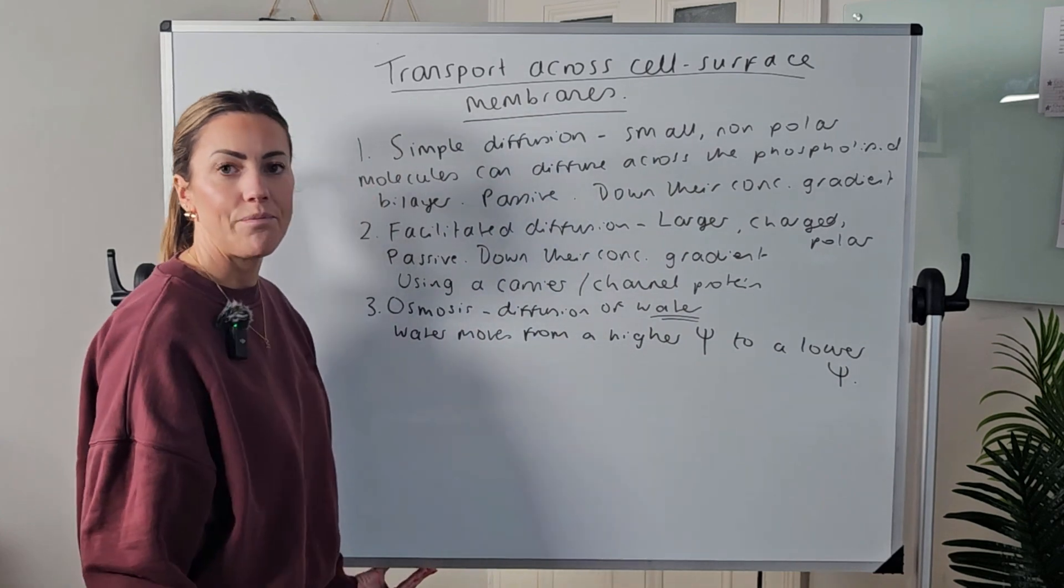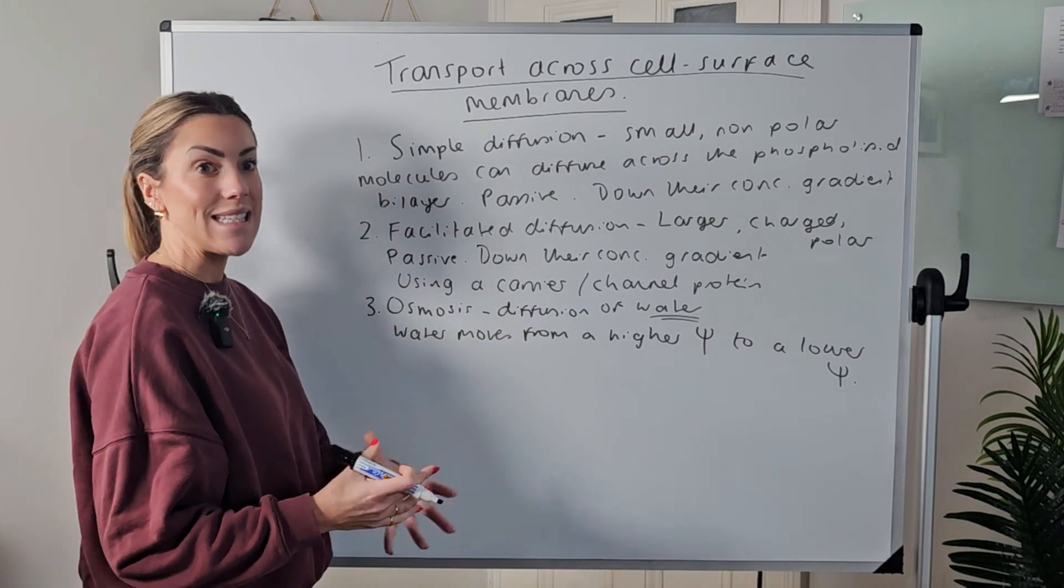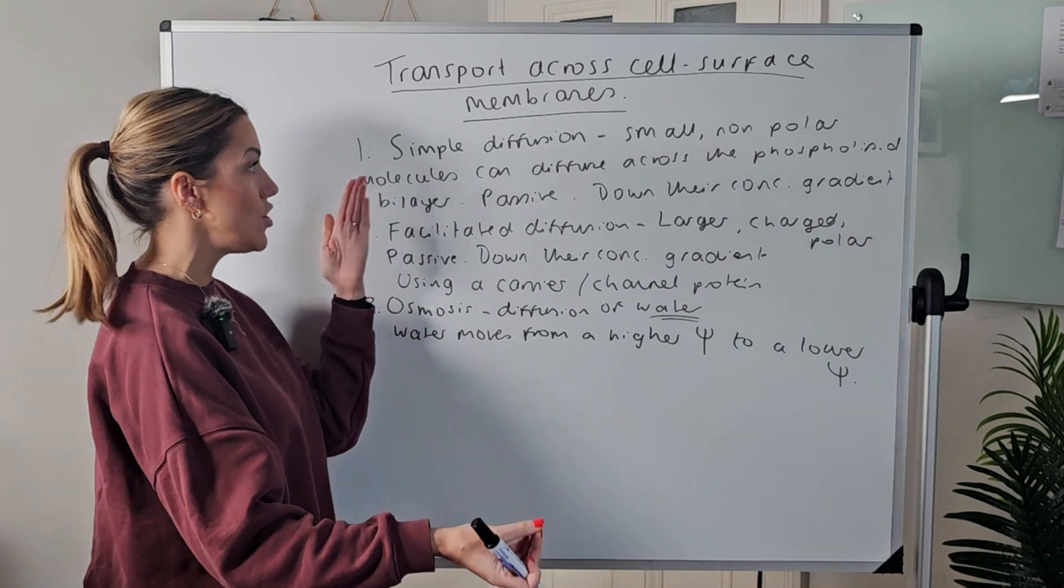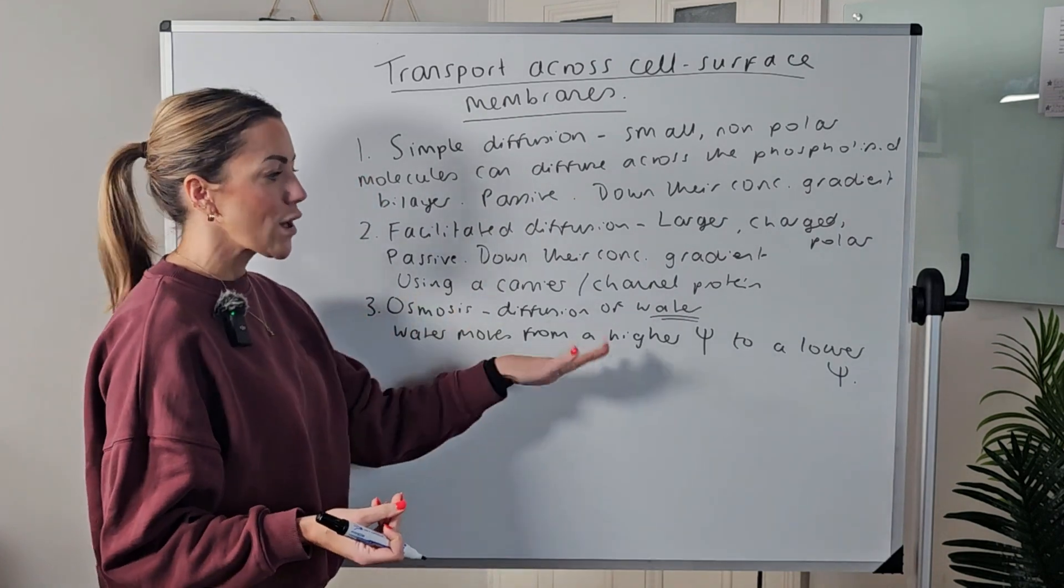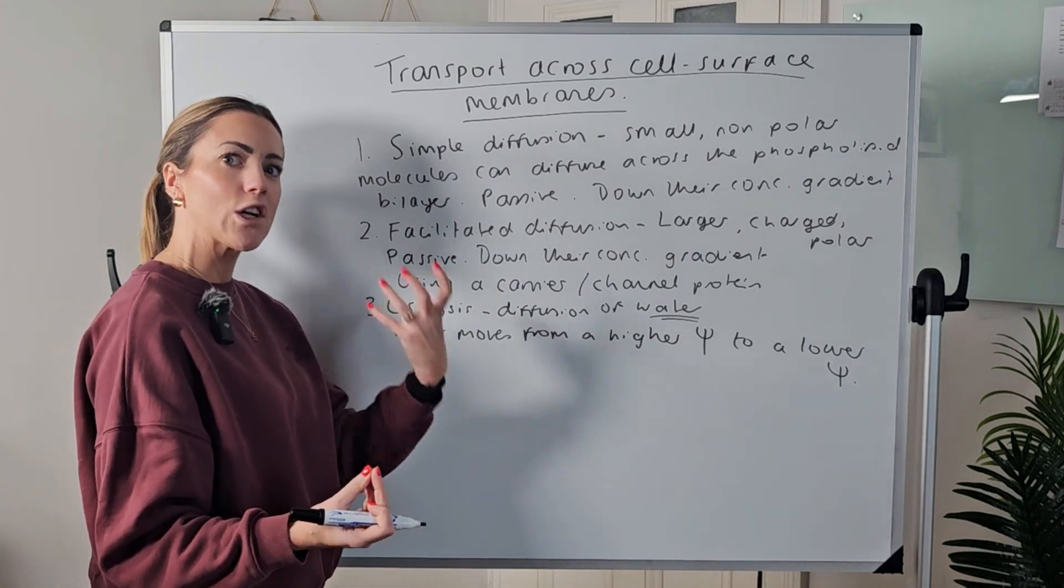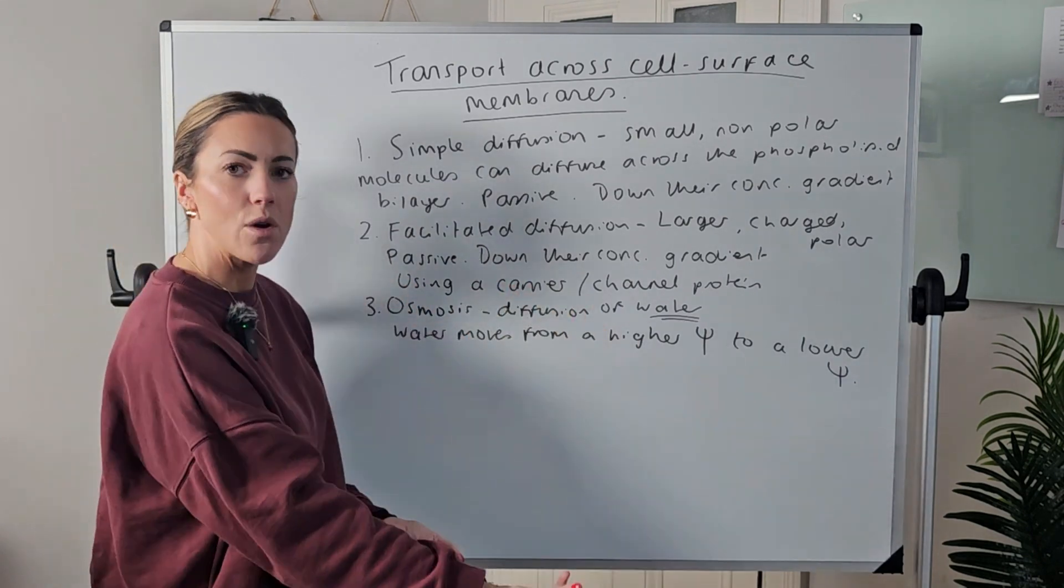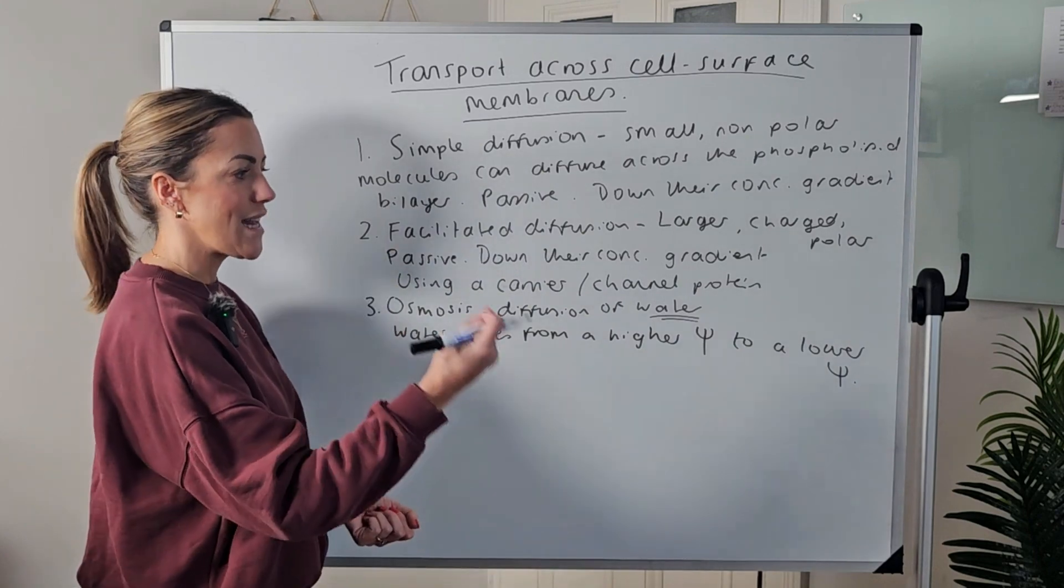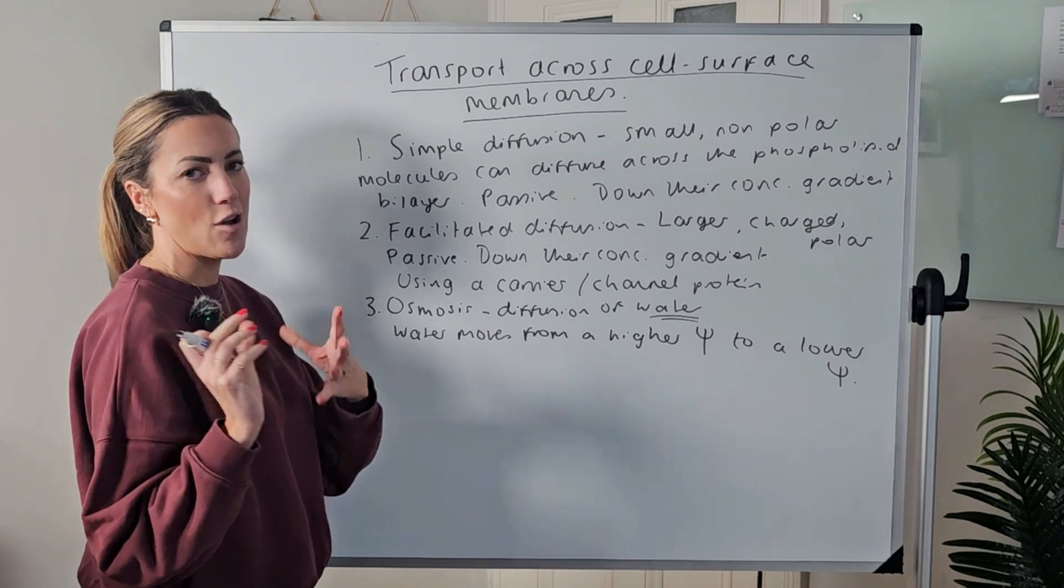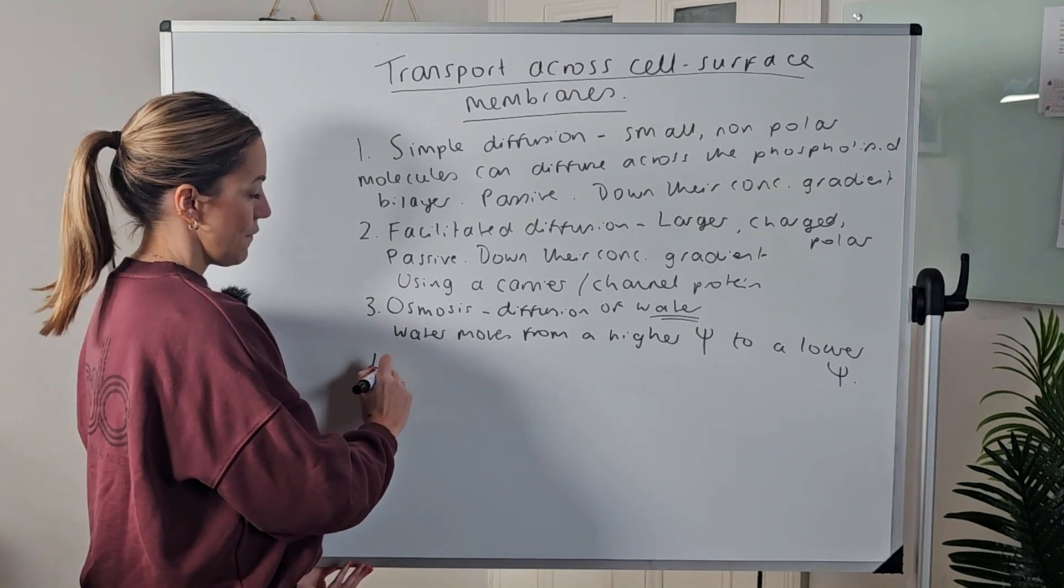Again it's passive, and one of the similarities is the water is moving down its concentration gradient just like with diffusion, but we're calling it a water potential gradient because it's going from a region where there's a higher concentration of water, which is a higher water potential, to a lower concentration of water, which is a lower water potential. And we should only be using osmosis obviously for the movement of water.